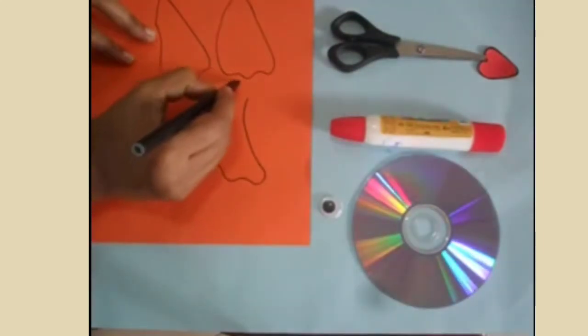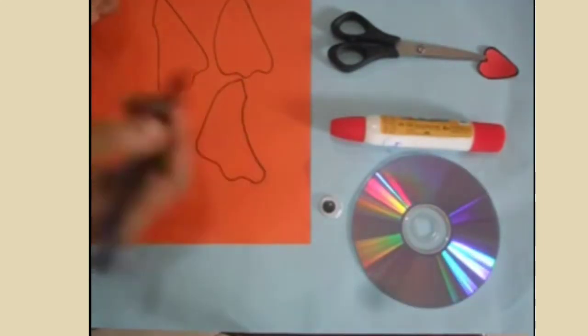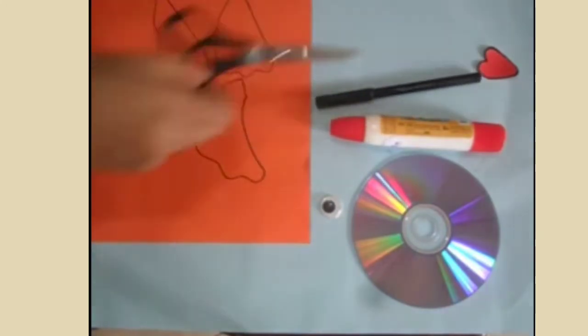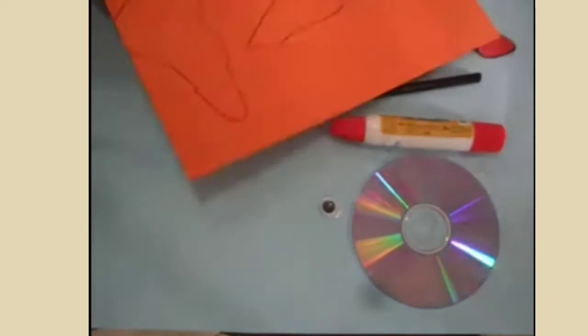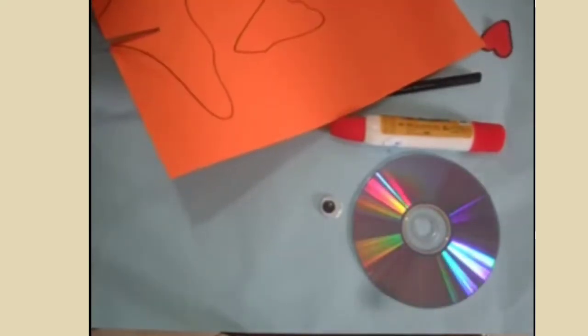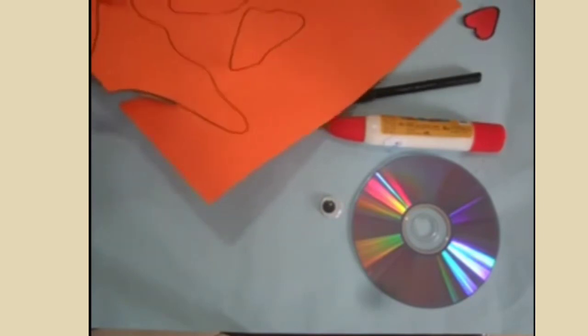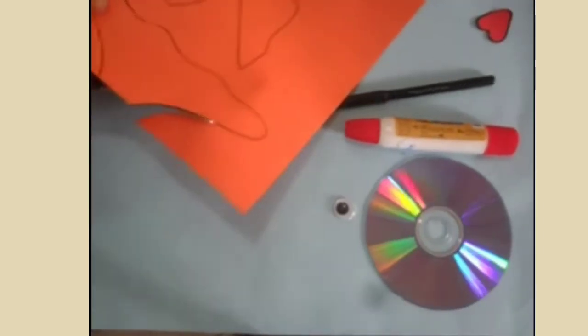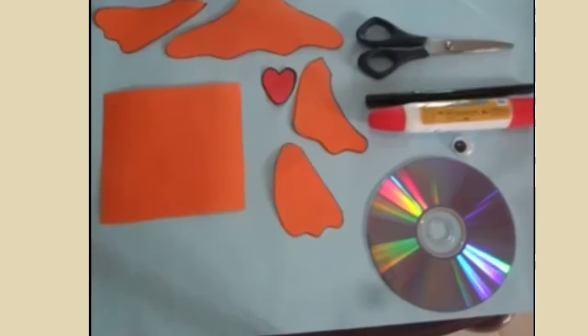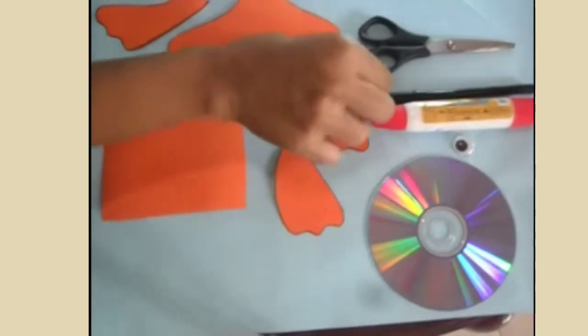In this manner you can draw the pattern of the tail and the fins using the black marker, and now with the help of the scissors you can cut the outline of the drawn tail and fins of the fish. Now take the help of your parents to cut it into the following pattern.